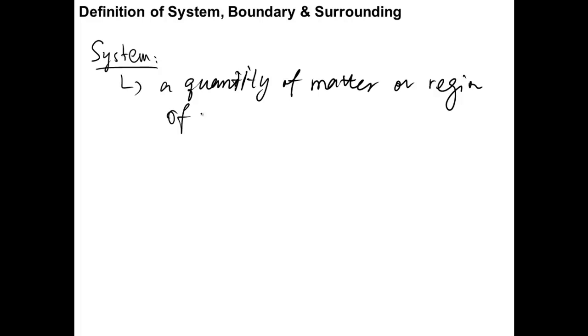So now what is system, what is boundary, and how is the surrounding defined? Let's talk about system first. We define system as a quantity of matter or region of space chosen to study its properties of state.